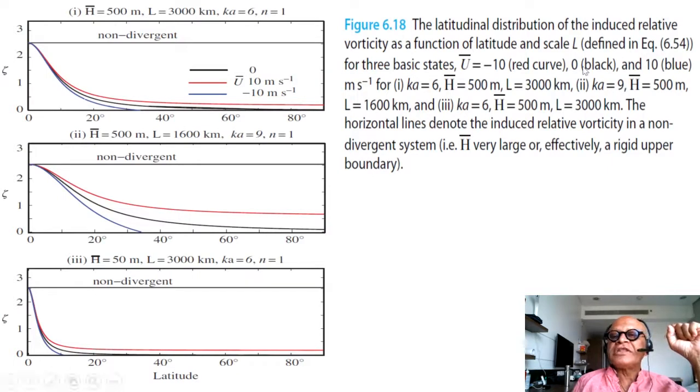You can look at the latitudinal distribution of induced relative vorticity with different background states again: easterly, stationary, and westerly basic states for different wave numbers k equals 6, 9, and for different depths as well as different horizontal scales. Now we've made this a little bit more complicated because now we're getting into more realistic flows.